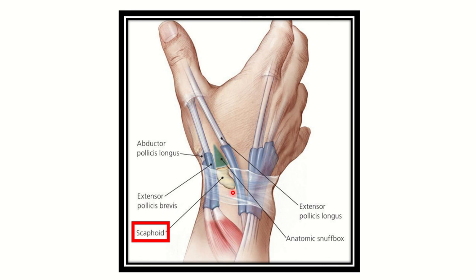The apex is formed by the junction of the two tendons, and the floor is formed by the scaphoid bone. Since tenderness is noted at this point, that means there is a fracture of the scaphoid bone. This is an important landmark to understand for any type of exam.